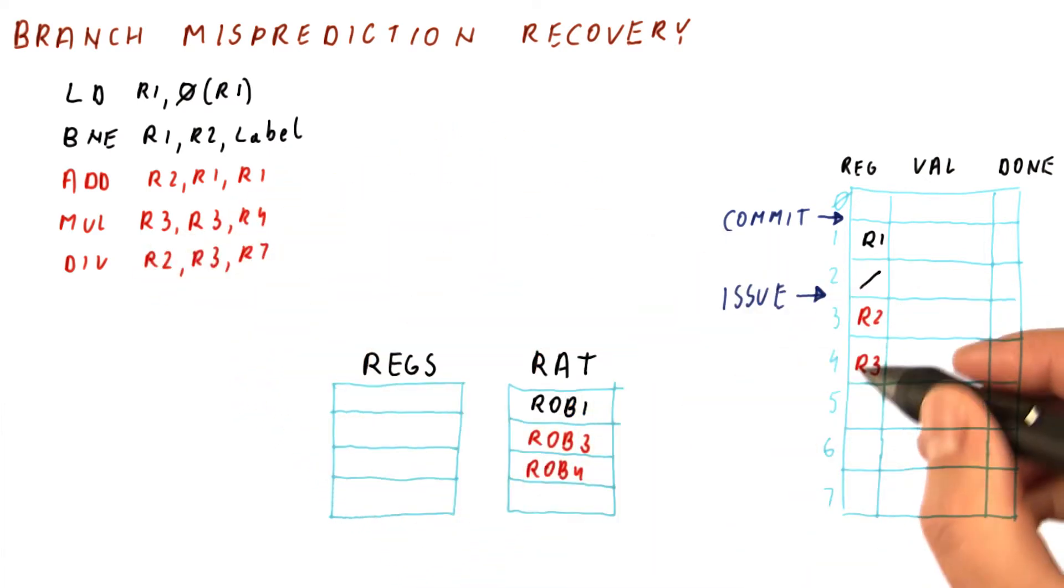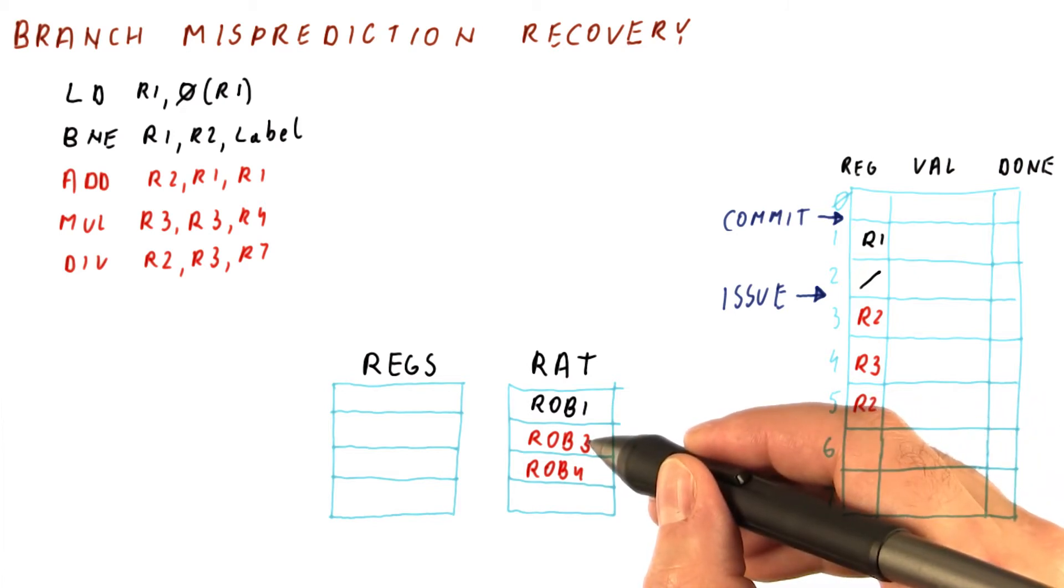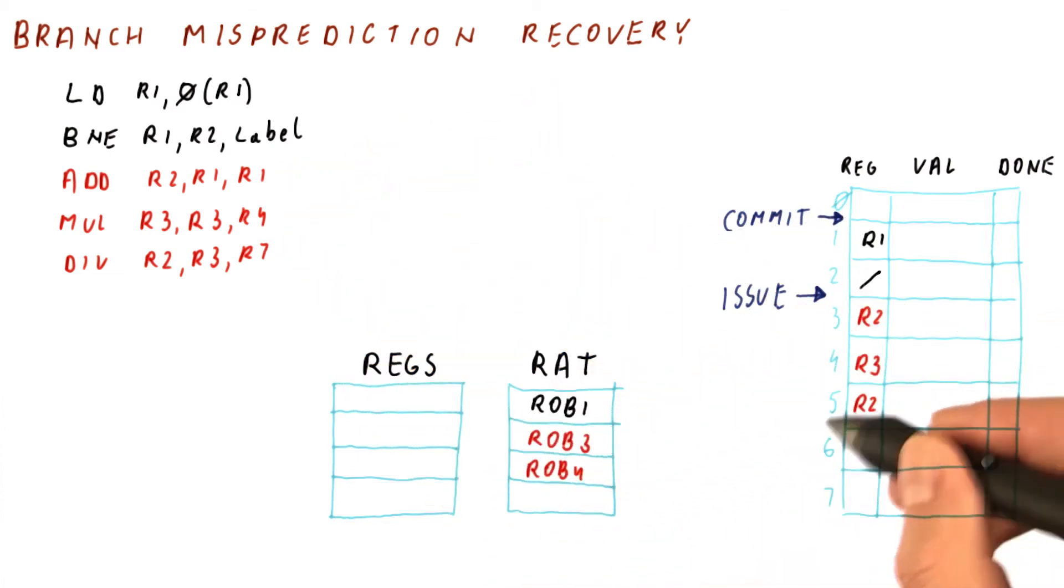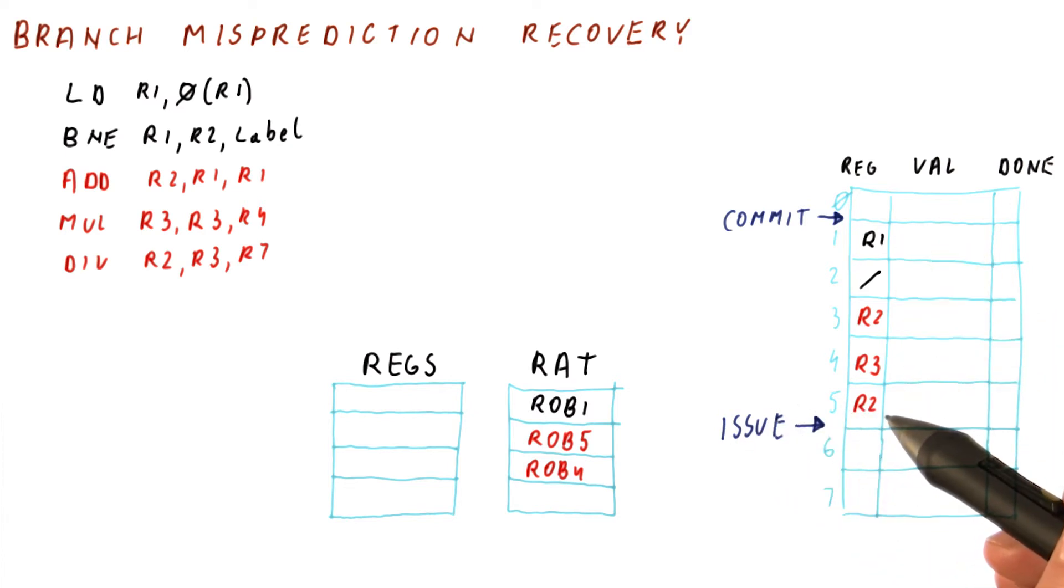And then the divide is going to again write to R2. And that means that the entry for R2 in the RAT will be changed from pointing to the add to pointing to the divide, which is ROB5. And of course, after all of this issuing is done, our issue pointer is now here, and we have five instructions in our ROB.